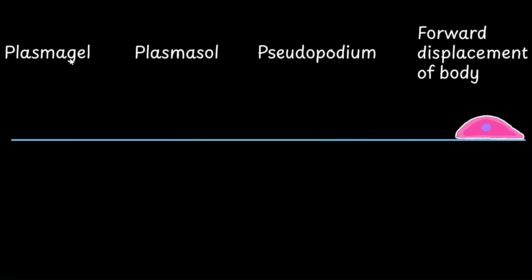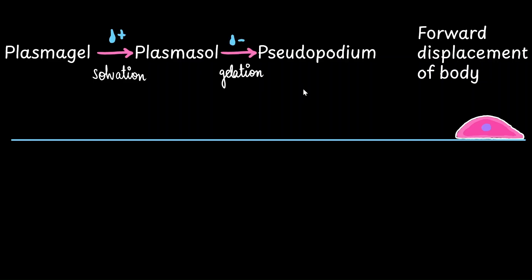To summarize: we have the plasma gel state of the cytoplasm. In order to move, this gel has to convert into plasma sol by a process of solvation. The streaming or flow of plasma sol pushing onto the cytoplasmic membrane is what extends the pseudopodium. To fix the pseudopodium, the plasma sol has to convert back to the gel state by a process called gelation — if you remove water from plasma sol, it turns into a gel, and we see a proper pseudopodial extension. Fixation of the pseudopodia then creates forward displacement of the amoeba's body.